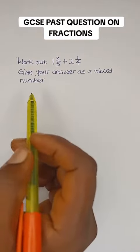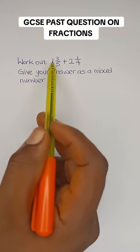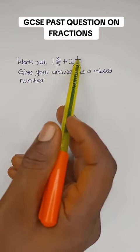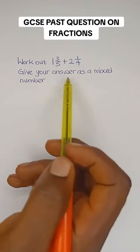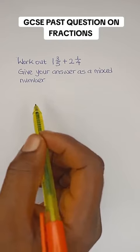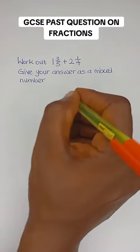Hi guys, let's look at this GCSE past question here. We are told to work out 1 3/5 plus 2 1/4. We are expected to give our answer as a mixed number. This is a simple question involving fractions, so let's solve together.